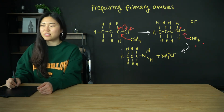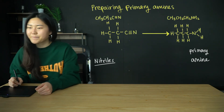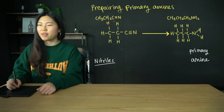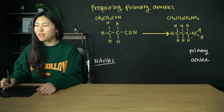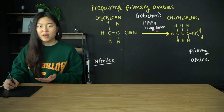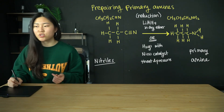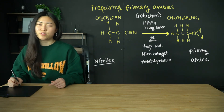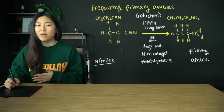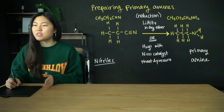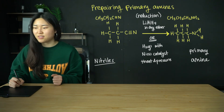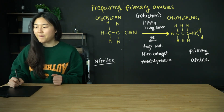Primary amines can also be prepared from nitriles. For example, propanenitrile can be converted to propylamine using reduction — either lithium aluminium hydride in dry ether, or hydrogen gas with a nickel catalyst under heat and pressure. These reagents and conditions are the same as those used for hydrogenation of alkenes.